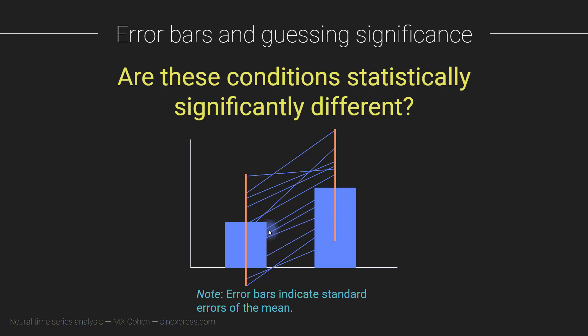So in fact, these two conditions are highly statistically significantly different from each other. The effect is really large. In this case, the error bars are telling us about how much variance there is across the population, across different individuals. That doesn't say anything about the actual effect.